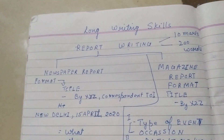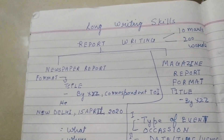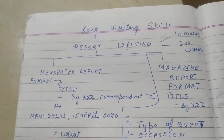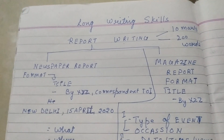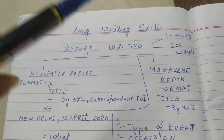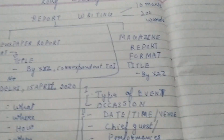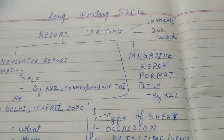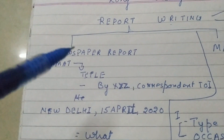A newspaper report, as the name suggests, appears in the newspaper and gives knowledge about various incidents that happened around us — like an accident, a function in society, or an inauguration ceremony — basically informing the masses. A magazine report is restricted to one particular organization, school, or society, catering to the people belonging to that institution.